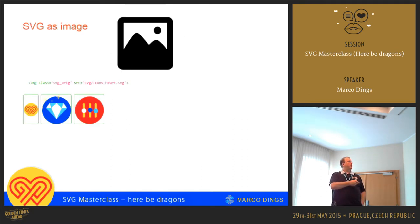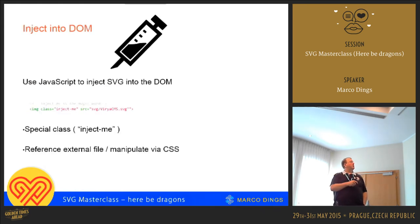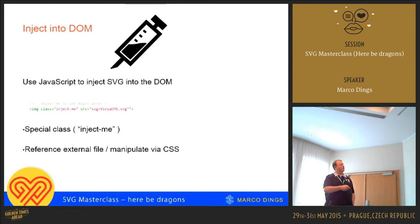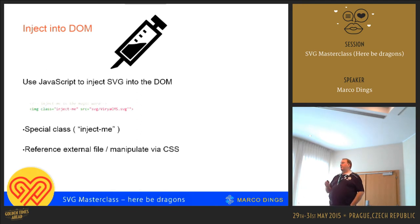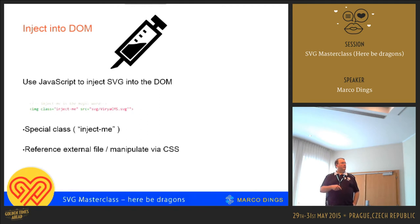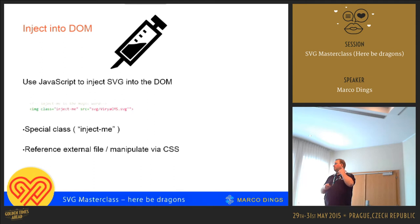As an image, you would have something like image class SVG and then reference the source. If you use JavaScript to inject it, you would have an image declaration with some kind of special class name, which allows your JavaScript to identify that this is actually an SVG. Then you have your external reference, and it will get injected, and you can manipulate it to a large extent.